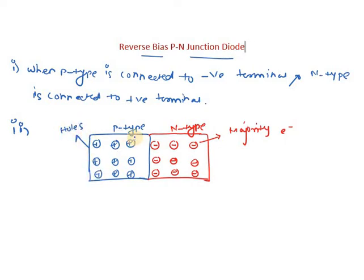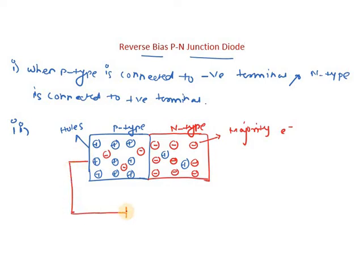Holes are majority charge carriers in p-type semiconductor. In n-type semiconductor we have holes as minority charge carriers, and in p-type semiconductor we have electrons as minority charge carriers. Now we connect the terminals: negative terminal is connected to p-type, positive terminal is connected to n-type. Such a combination is called a reverse biased p-n junction diode.